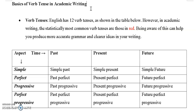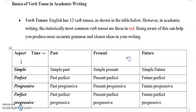First, English has 12 verb tenses. You can see them in the table here — the simple, perfect, progressive, and perfect progressive tenses with past, present, and future. I'm sure you've spent time learning all of these, but you've realized that not all of them are very common. For example, the future perfect progressive is not a very common verb.